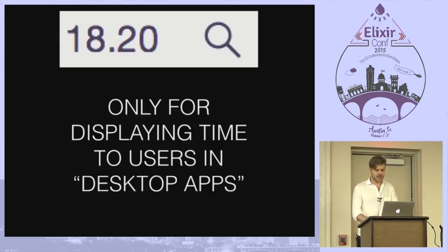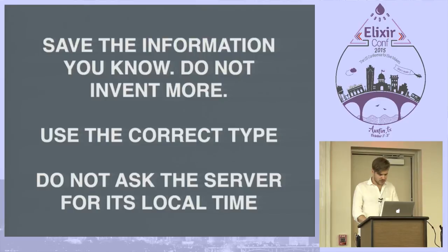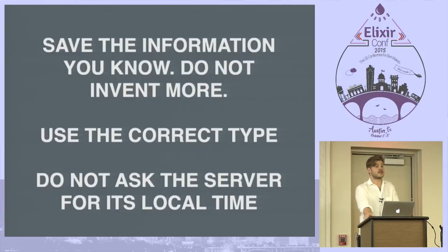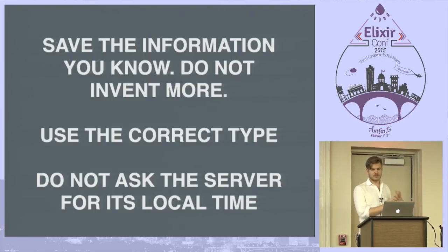Local time only makes sense if you want to display the current time to a user, or basically if you're doing a desktop app. Otherwise, don't do that. You can get the current time in UTC and then convert it. So: save the information you know, don't invent things, use the correct type, and don't use local time on a server. But when you do work with local time — when someone tells you this is the time and they're scheduling a meeting in a time zone — save the name of the time zone and the time they tell you. When working with the server, if an event happened right now, use UTC.